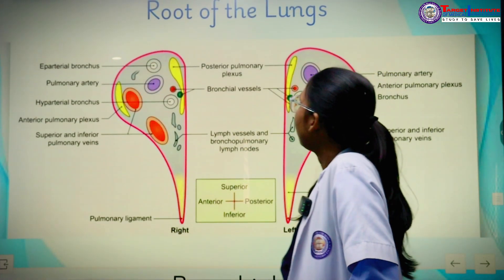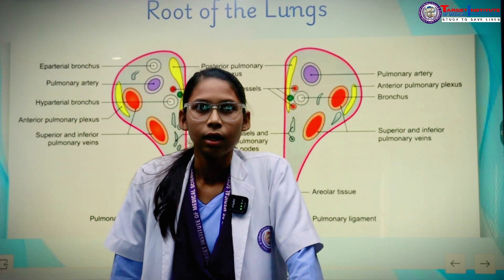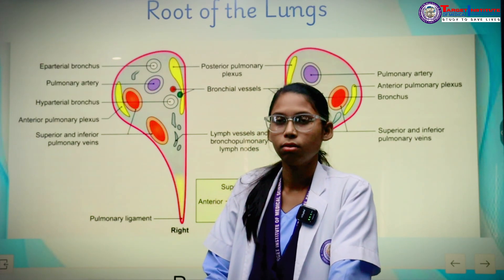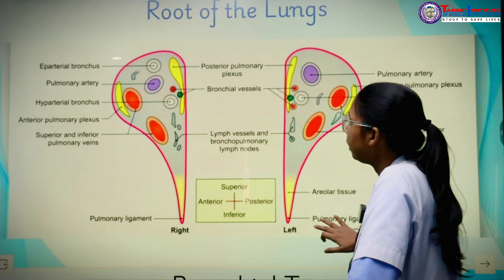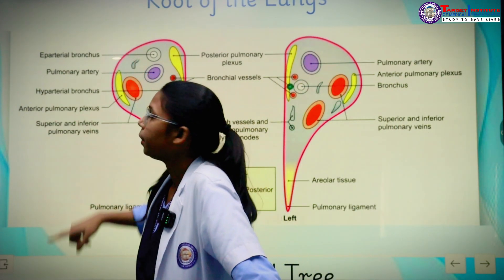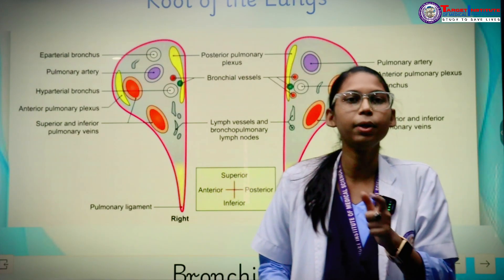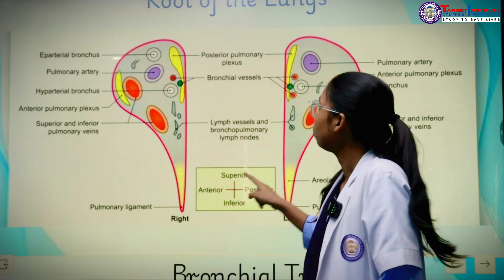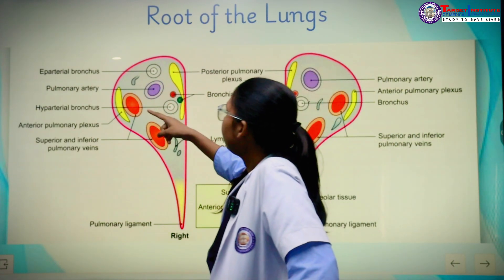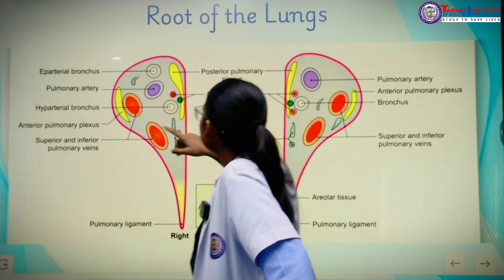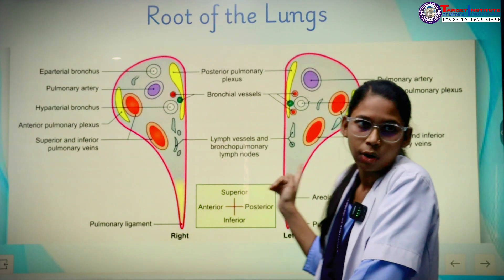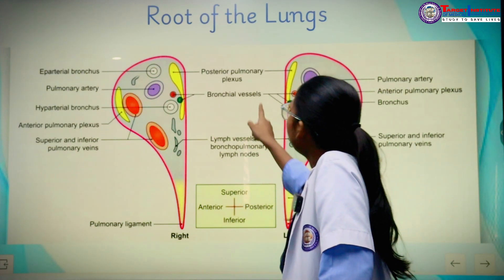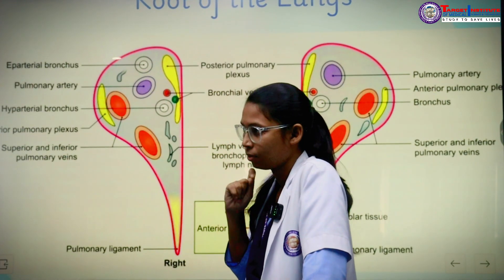The root of the lungs is a short structure that connects the medial surface of the lungs to the mediastinum. The contents of the root of the lungs include: the primary bronchus — the right root has an eparterial bronchus while the left has only one principal bronchus — and both have one pulmonary artery, plus bronchial vessels.